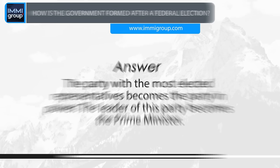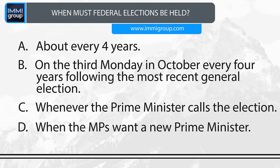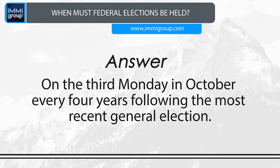When must federal elections be held? A. About every four years. B. On the third Monday in October, every four years following the most recent general election. C. Whenever the Prime Minister calls the election. D. When the MPs want a new Prime Minister. Answer: On the third Monday in October, every four years, following the most recent general election.